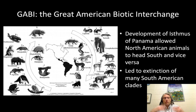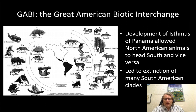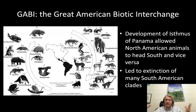So to wrap up our look at Cenozoic mammalian divergences in general — specific cases coming up for the next couple of weeks — one of the big events towards the most recent part of Earth history is called GABI, the Great American Biotic Interchange. Now as I've explained, South America was an island continent for most of the Cenozoic. It was isolated from the rest of the continents; it had its own endemic, that is unique, fauna.